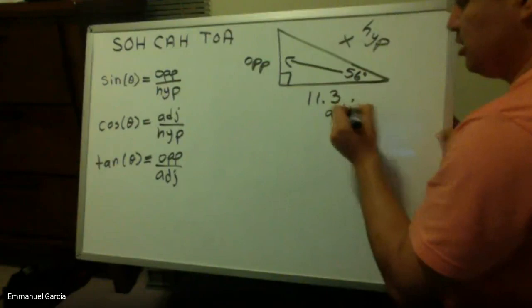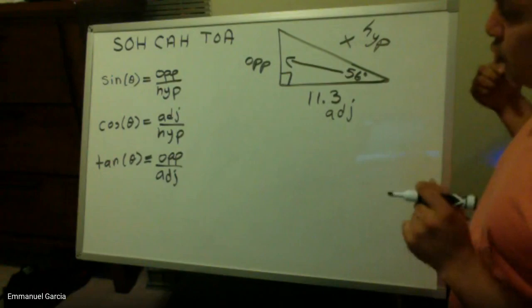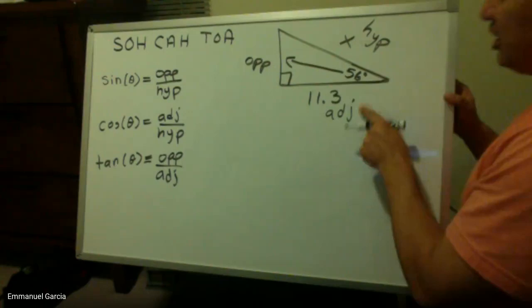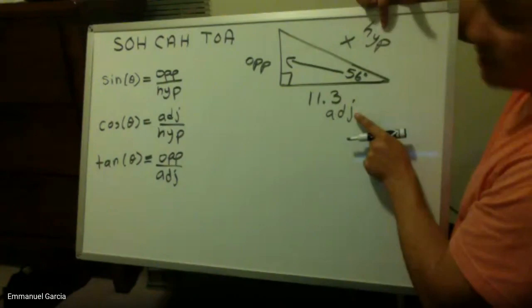Now I need to look at which two sides I'm going to be using for this problem. So which two sides do I have? I have the adjacent side and I want to look for the hypotenuse. So I need to work with a trig function that relates these two.